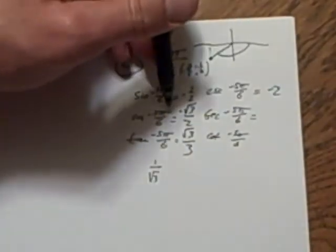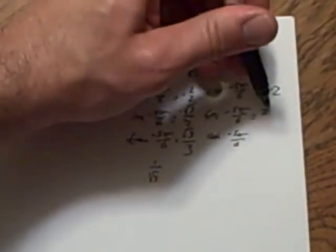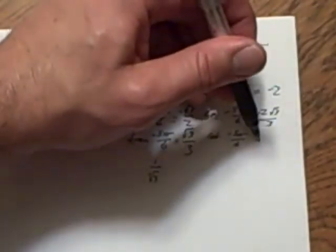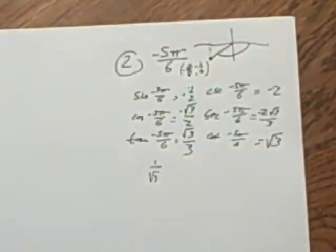Cosecant is sine flipped over, negative 2. Secant is cosine flipped over, negative 2 root 3 over 3. Flip that over, and this one, flip this one over, square root of 3.